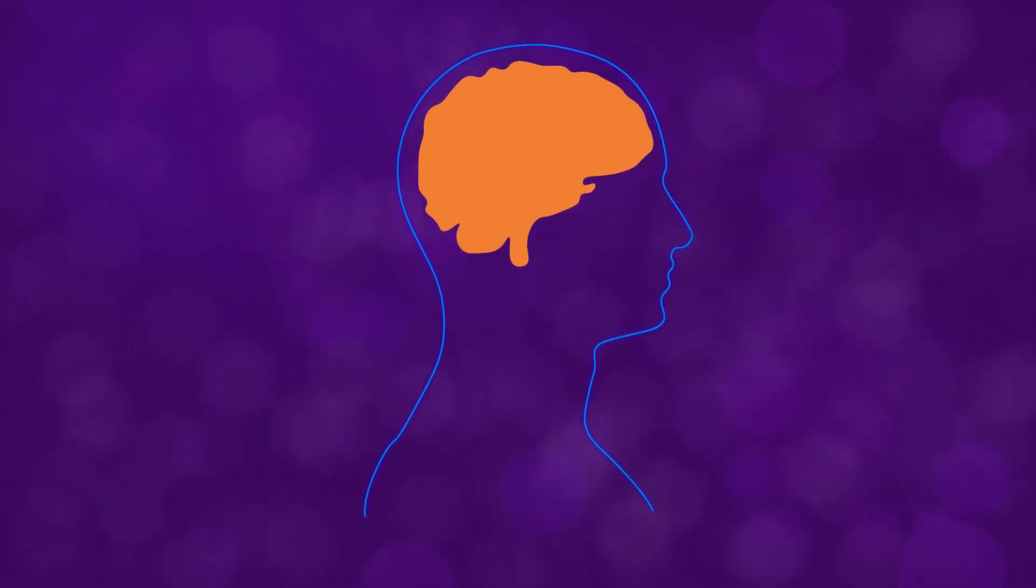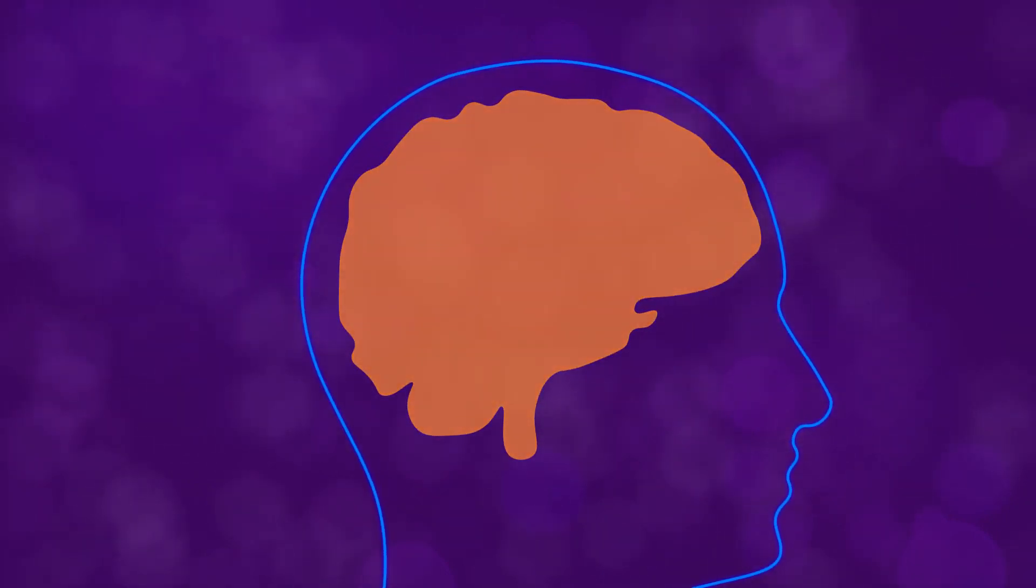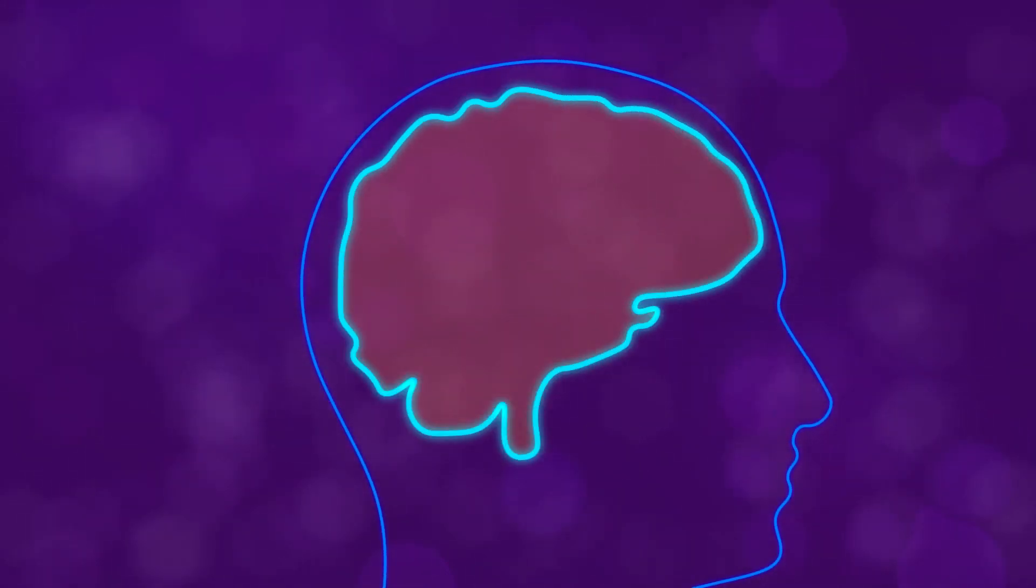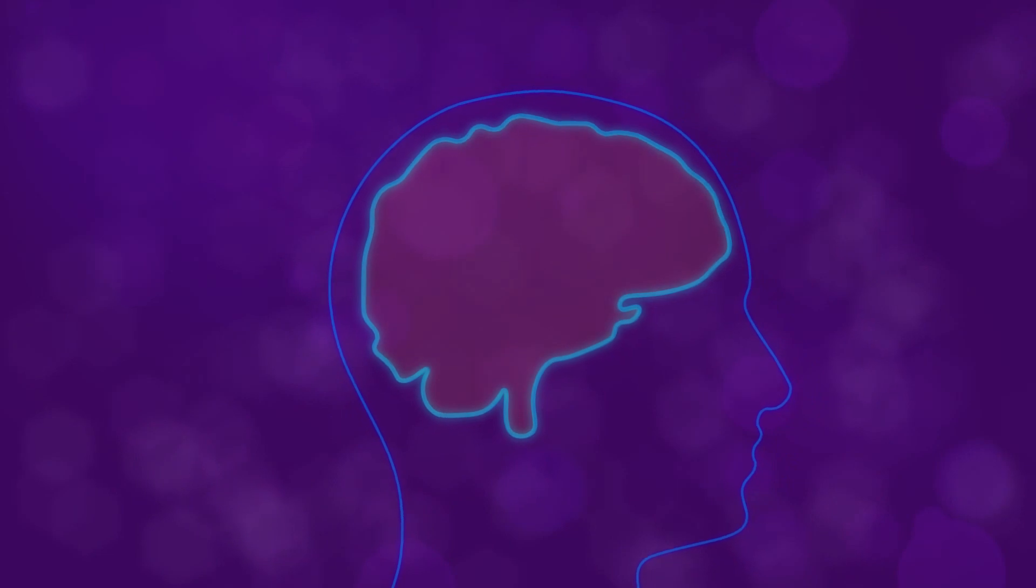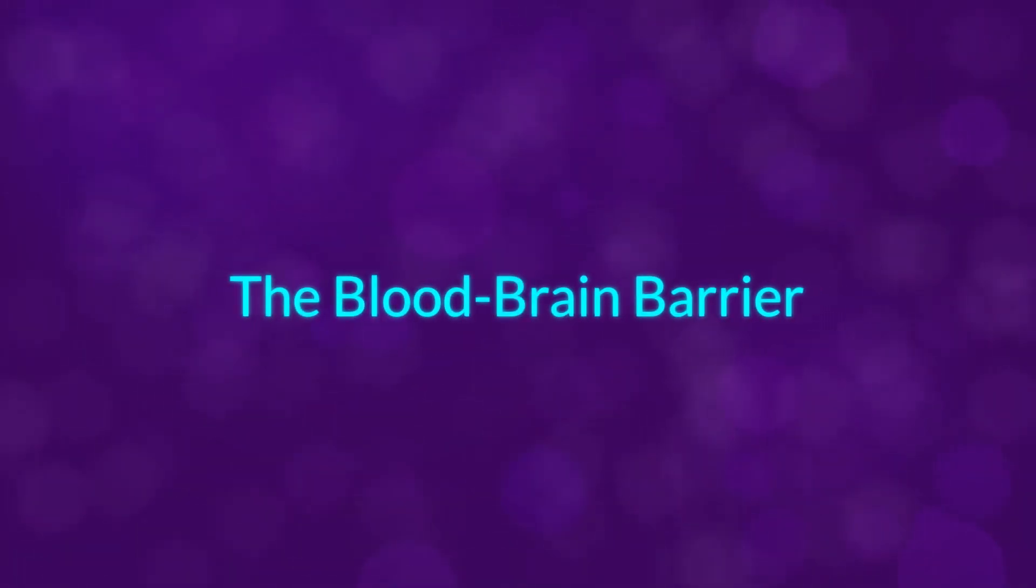The human brain is essential in the everyday functions of our bodies. With such an important role, it makes sense that our brain is equipped with its own security system. That security is provided by the blood-brain barrier.